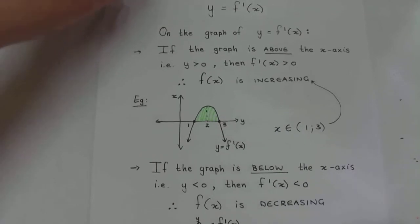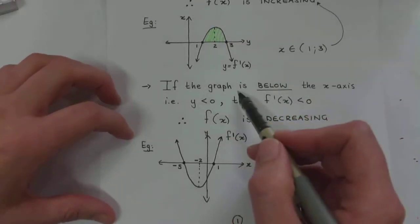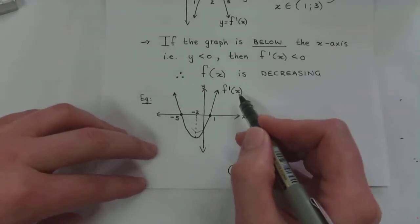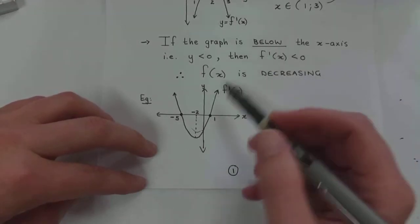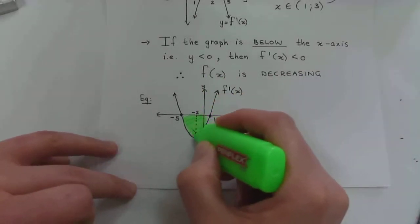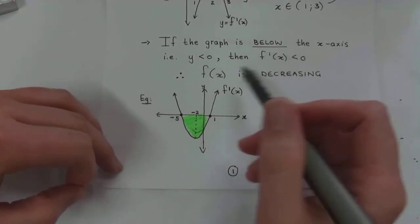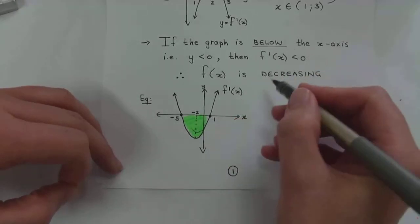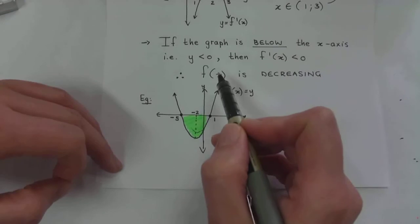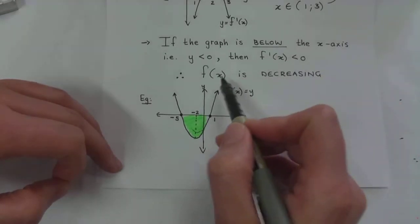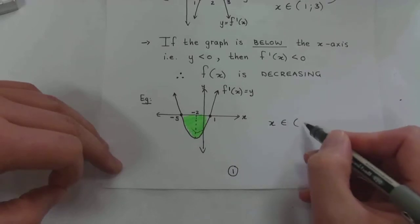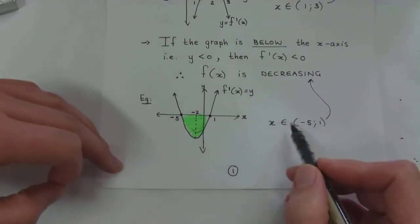The next thing we have to look at is if the graph is below the x-axis. Again, please note this is not the graph of f(x) — this is the graph of the derivative of f(x). So if this graph is below the x-axis, then y is less than zero. But in this case y is equal to the derivative of f(x), which means the derivative is less than zero, and that means the original graph is decreasing. So f(x) from negative five to one is decreasing.